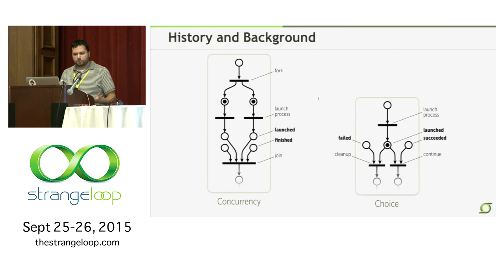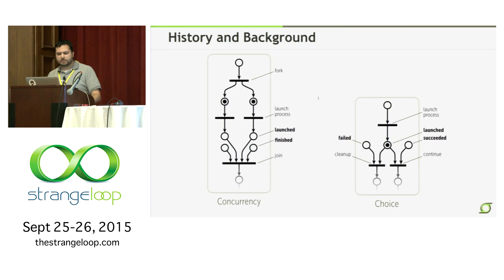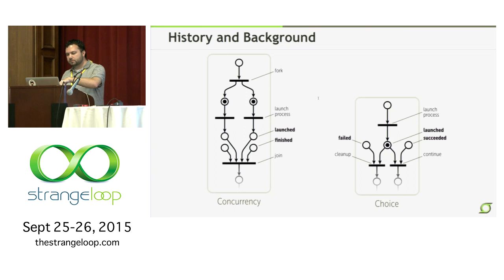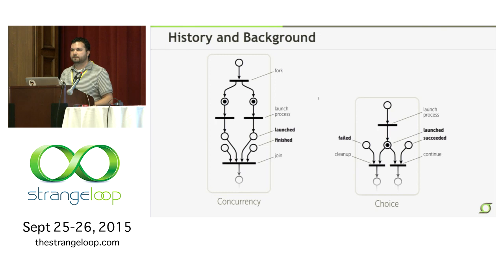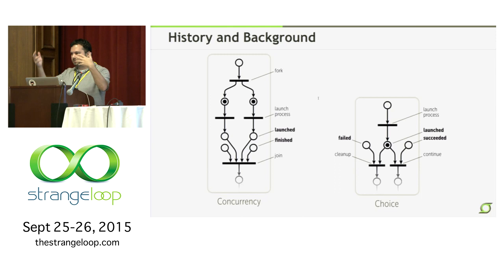We use Petri nets to do both choice and concurrency. On the left is an example of concurrency: you make a transition so when you start with just a token at the top, now you've got two tokens. You use transitions called 'launch process' to actually have a side effect — in our case, sending a webhook somewhere else to launch a process. There will then be two tokens in the launch state but nothing in the finished state. We have another way in our service for those launched processes to say they're done, and when they all say they're done, a join transition allows you to continue on in your workflow.